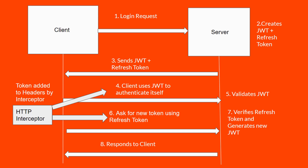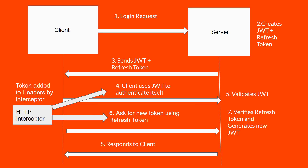We need an interceptor that modifies each outgoing request to the backend by adding the token to the header. We also maintain the refresh token logic inside this interceptor. When the client sends an expired token, the server responds with a 403 error, at which point we request a new token using the refresh token, and use that new access token for subsequent requests.